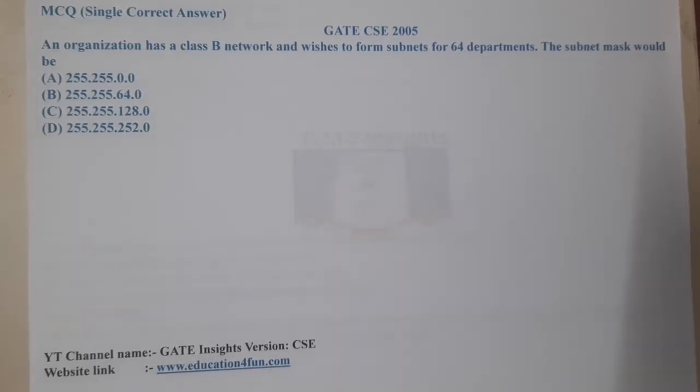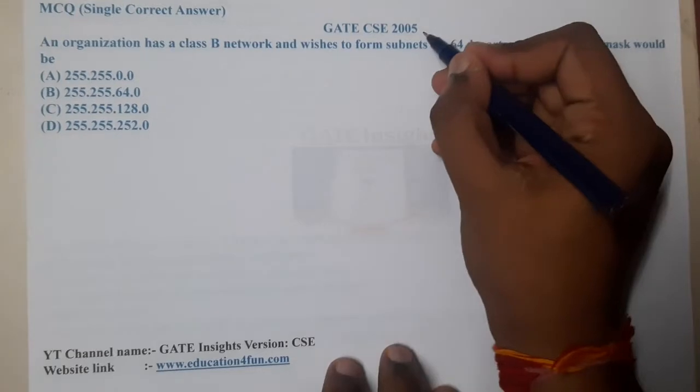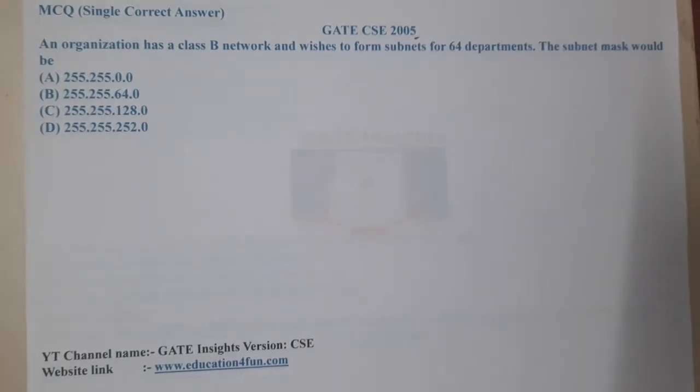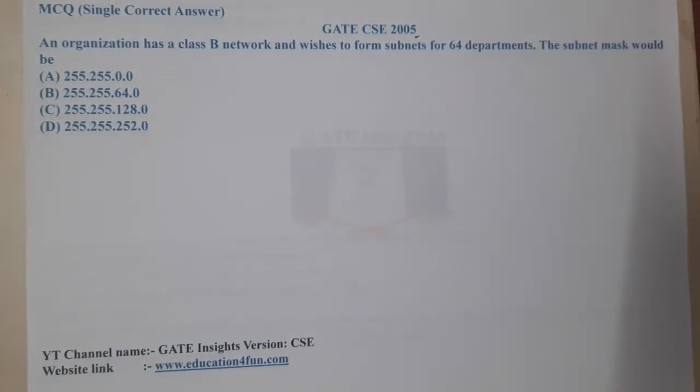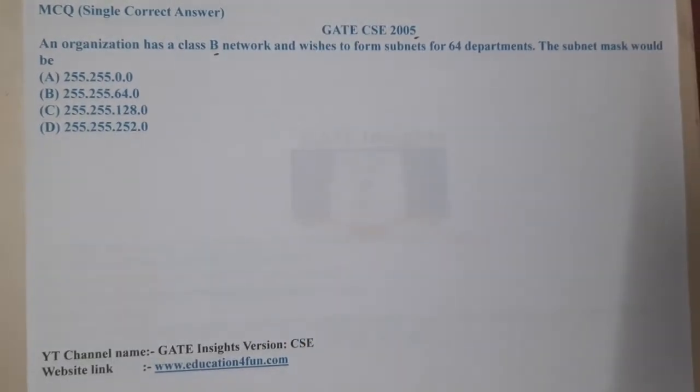Hello guys, you're back with our next lecture. In this lecture, let us go through the next question. This question belongs to GATE CSE 2005. The given question is: an organization has a Class B network.